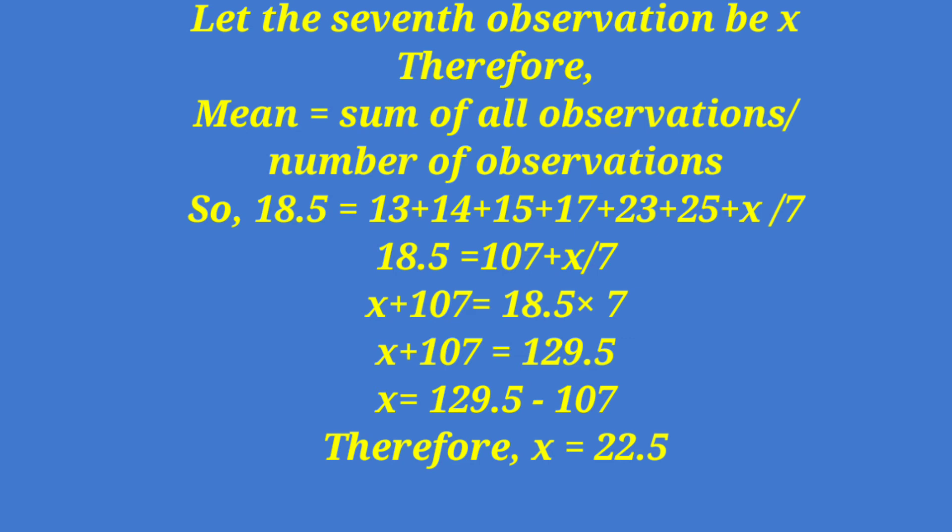So 18.5 equals 107 plus x, divided by 7. We bring the x plus 107 to this side using cross multiplication: 18.5 times 7. We get 129.5 by multiplying. Then this 107 is on the left-hand side, so we take it to the right-hand side as the simple equation says.